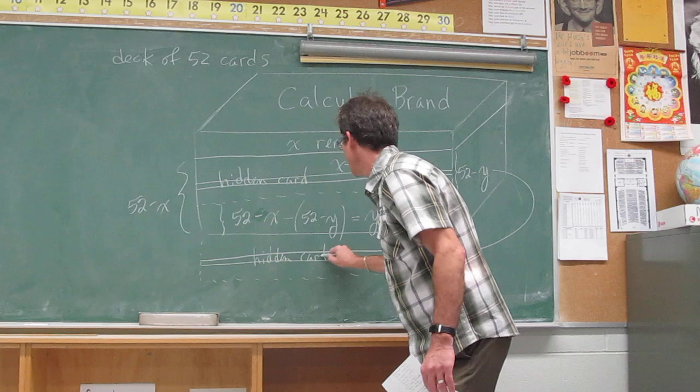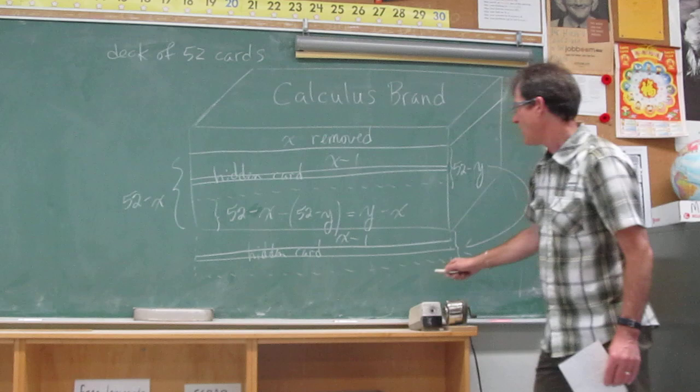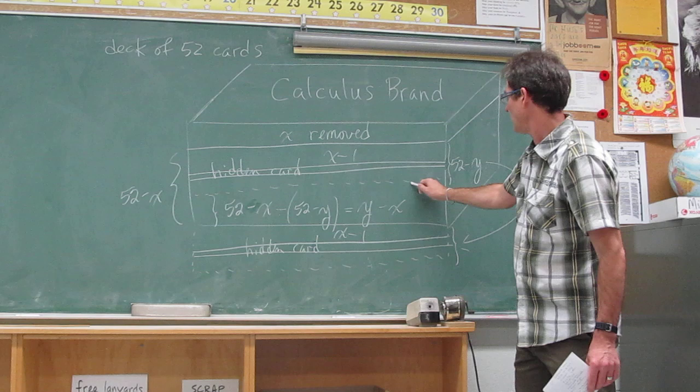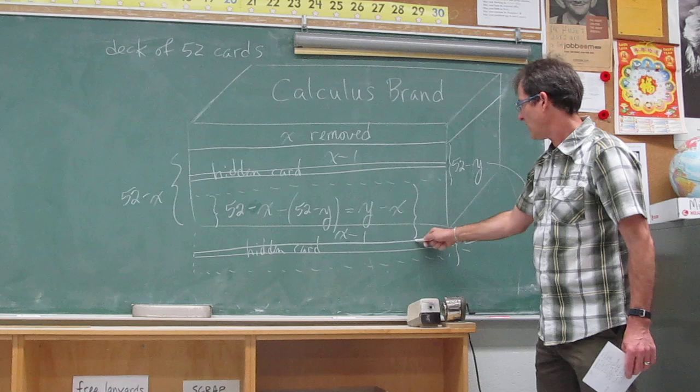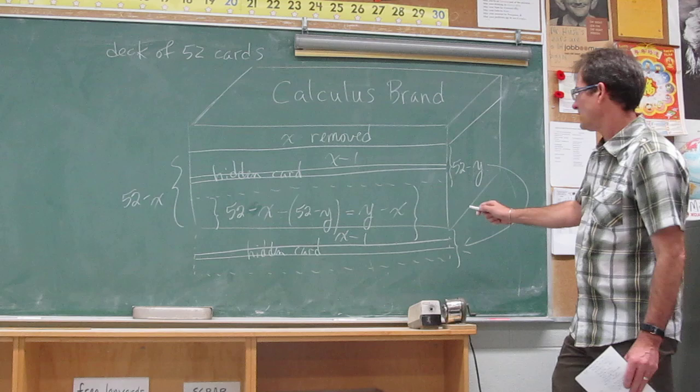This is X minus 1 again. That's this number here. And then there's some more cards down here. But I want to know where this card is in the deck. The top of the deck is here. The top of the new deck. That's where the hidden card is, right below there. So what's that?